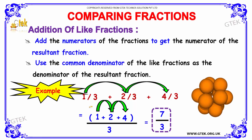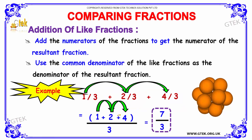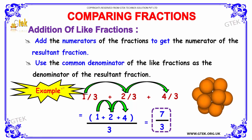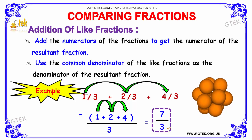In this example, the denominators are 3, 3, and 3. Like fractions have the same denominator, which here is 3. Since the denominator is common, we can simply add the numerator part. So 1 plus 2 plus 4, divided by 3. On adding, we get 7 divided by 3. This is one example of addition of like fractions.